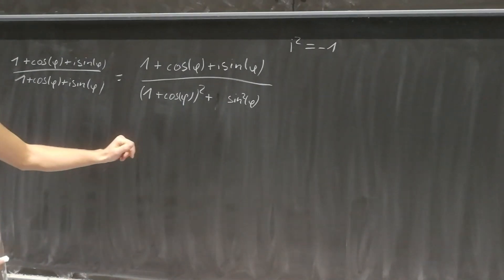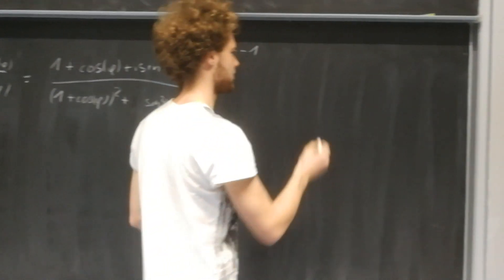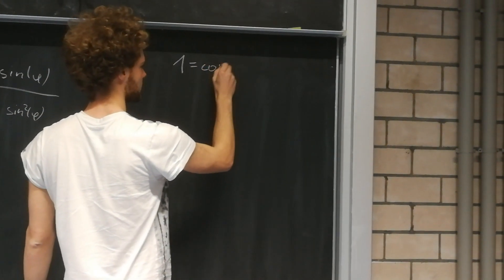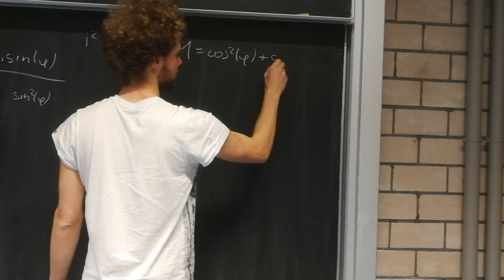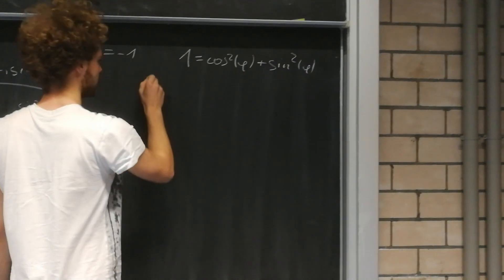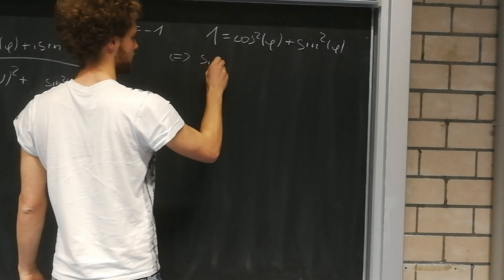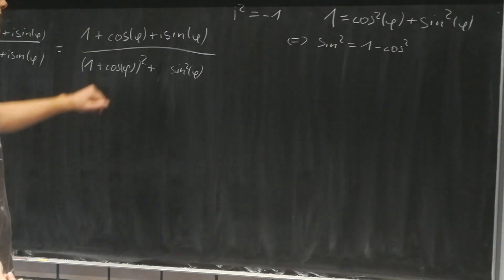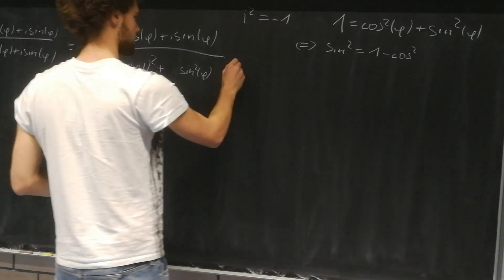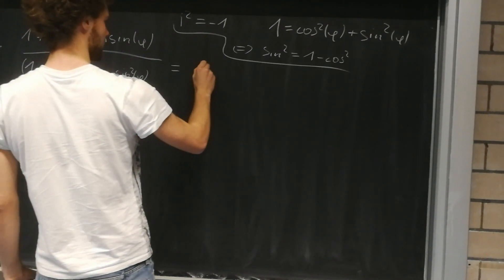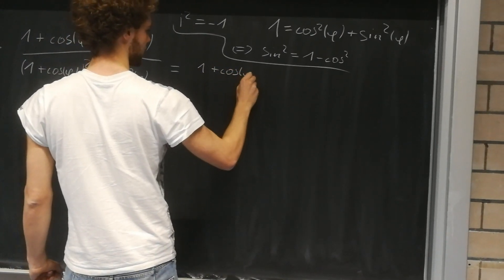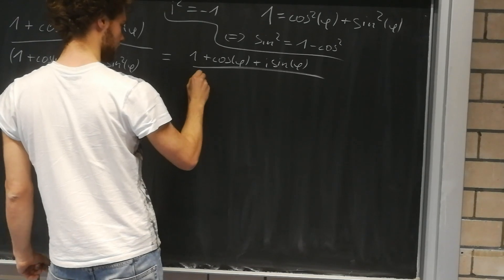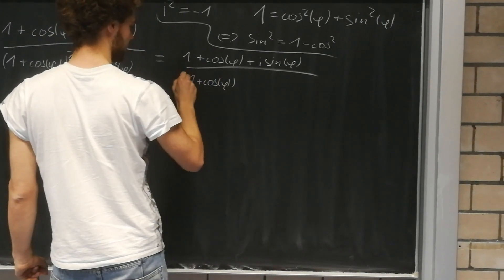Now let's have a look at this denominator — can we simplify it a bit? You might remember the trigonometric Pythagorean identity: 1 equals cosine squared of phi plus sine squared of phi. So let's rewrite: sine squared is nothing but 1 minus cosine squared. And this gives us 1 plus cosine of phi plus i sine of phi over 1 plus cosine of phi squared.